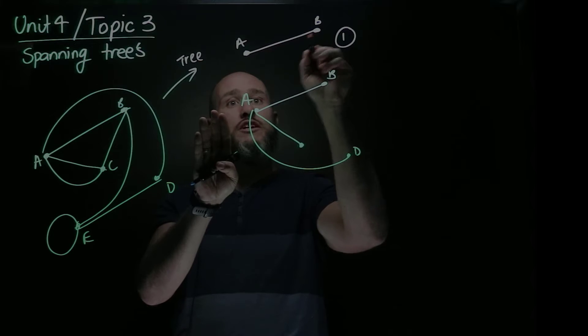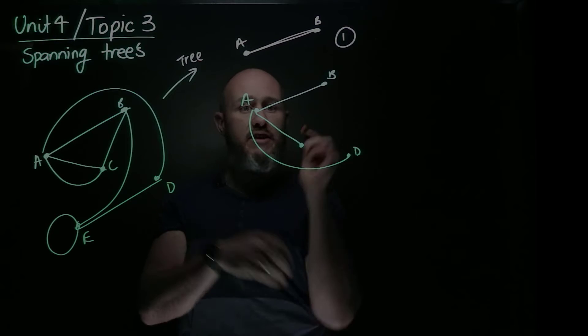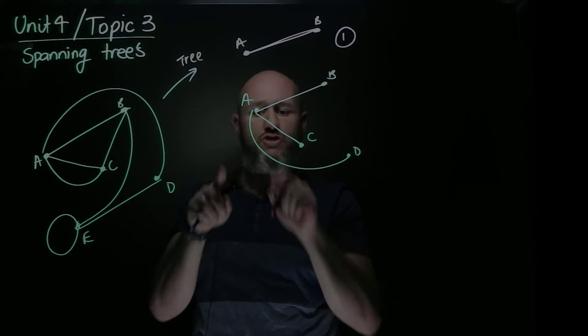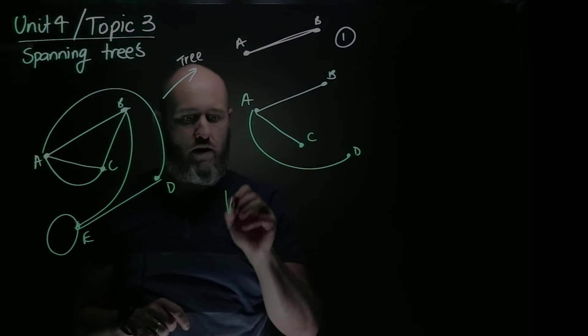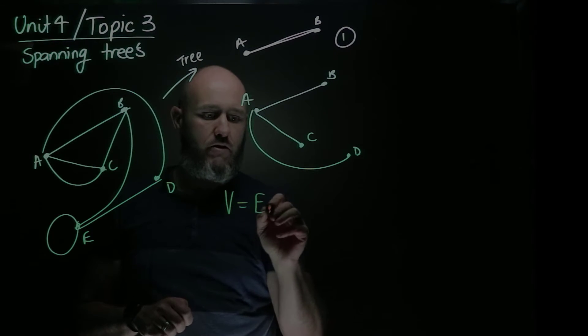If I add another vertex, I have to add one edge to make it a tree. So that means I've got two vertices, one edge. And this happens no matter what. I've got four vertices, three edges. And in fact, the general rule will be vertices will equal edges plus one, or edges equals vertices minus one, which is actually probably a bit more common.